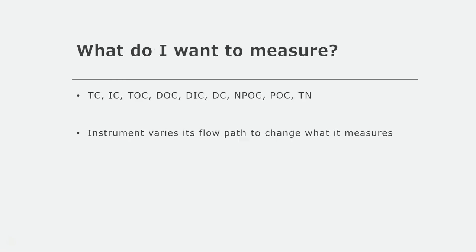Now that we understand how the TOC works and what all of its parts do, how do we know what we want to measure and how do we make the instrument measure different things? The instrument can measure many different things: TC, IC, TOC, DOC, DIC, DC, and more. So let's break them down and figure out how you need to prep your samples to measure them.